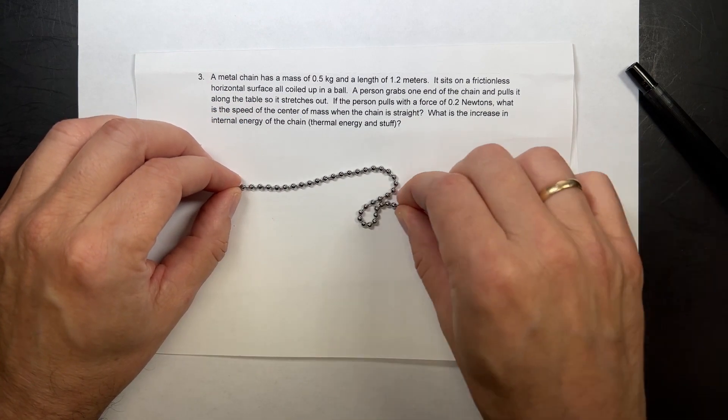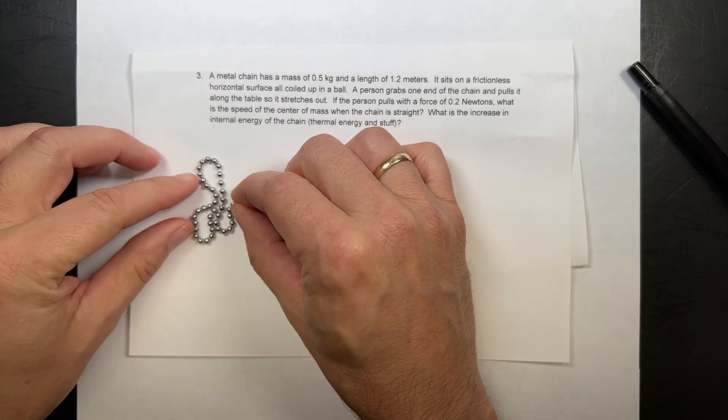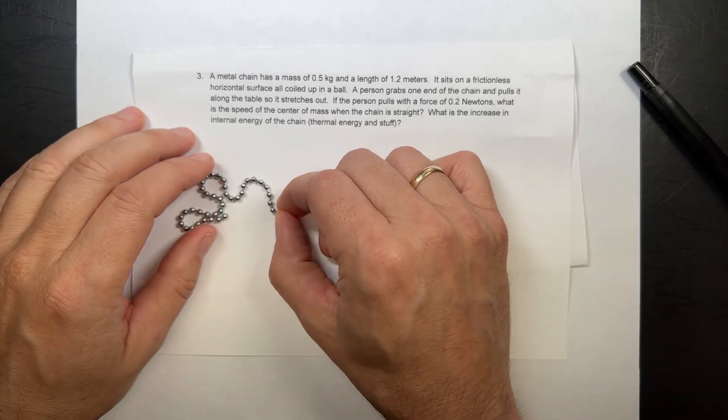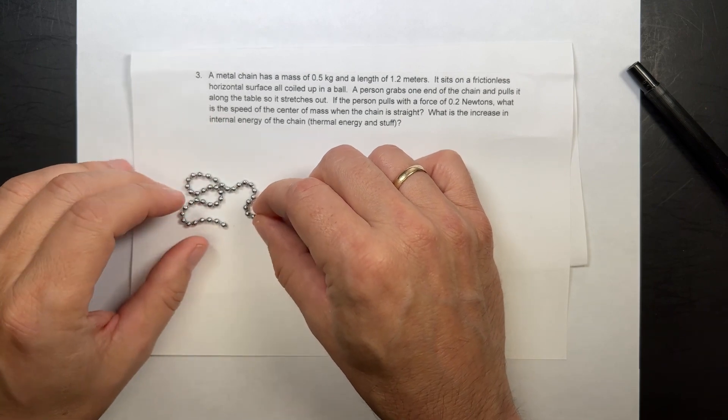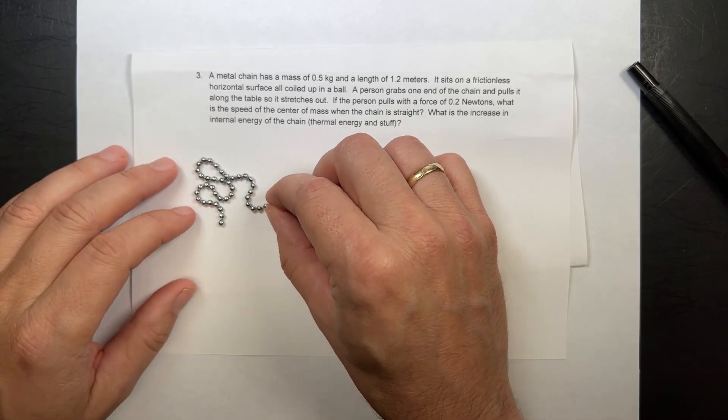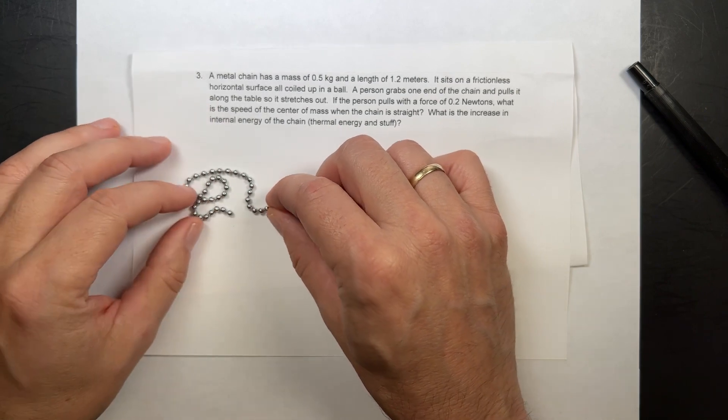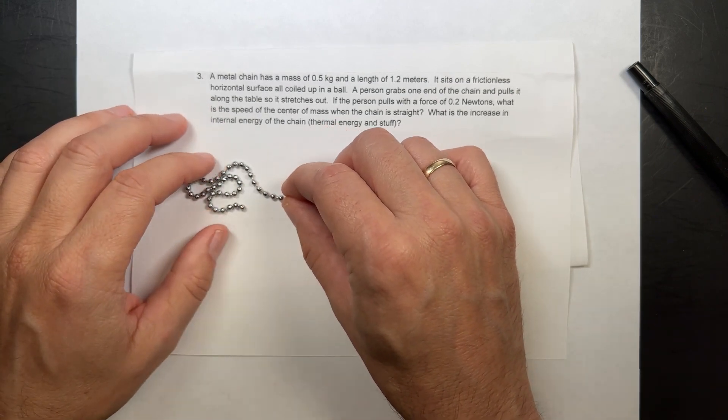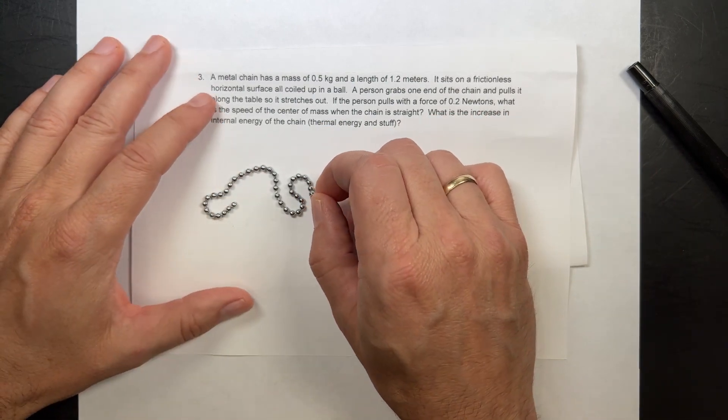And so I'm pulling with a constant force, but you notice that when I'm first pulling this, I'm only pulling part of the mass. I'm only accelerating this. This part is not accelerating. So I really can't use the momentum principle here because I don't know what the mass is that I'm pulling. You could figure it out, but it's kind of difficult.